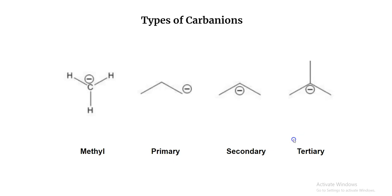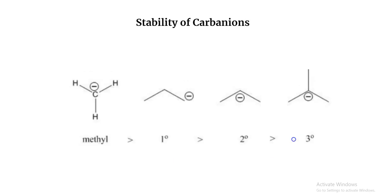If the negative charge is concentrated on a carbon connected to three other carbons, that's a tertiary carbanion. Now, the stability of carbanions is actually the opposite of carbocations. In carbocations the tertiary was the most stable and the methyl was the least stable. In the case of carbanions, the methyl carbanion is the most stable and the tertiary carbanion is the least stable. We'll discuss the reasoning in our next session.